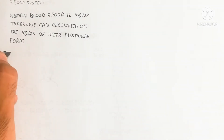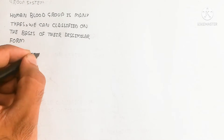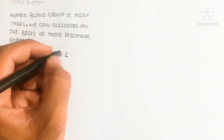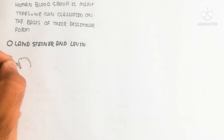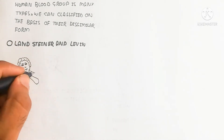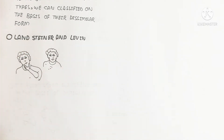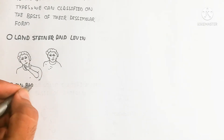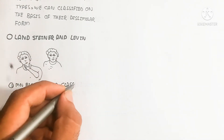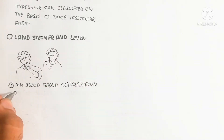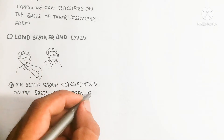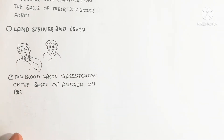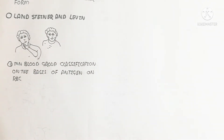The RBC contains different types of antigens. Here we will understand the MN antigen. The N antigen is present on the surface of the red blood cell, while the M antigen is also present on the surface of the red blood cell. MN means both antigens are present on the same surface of the red blood cell.